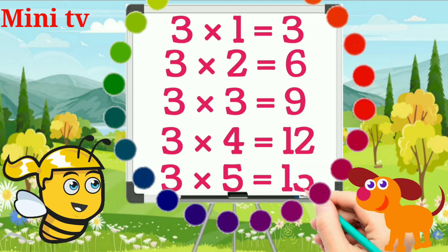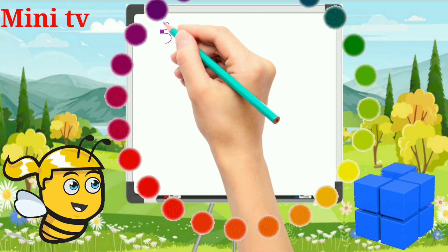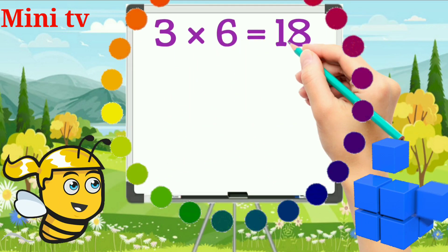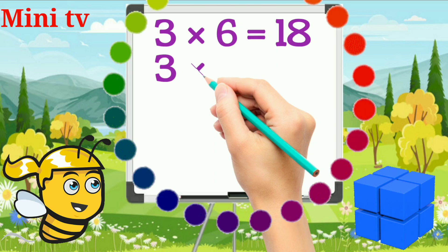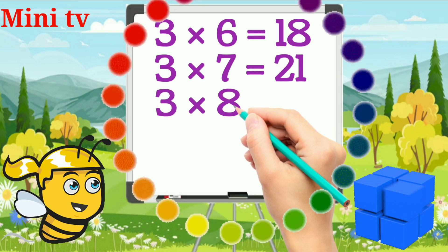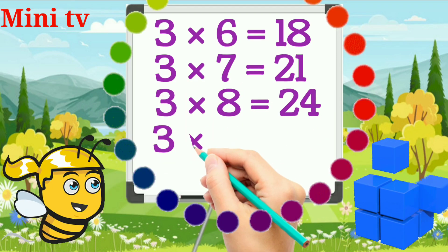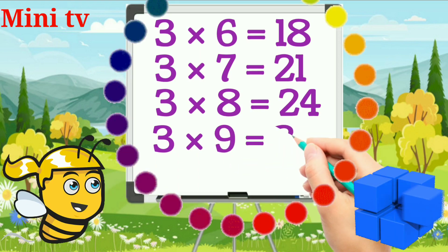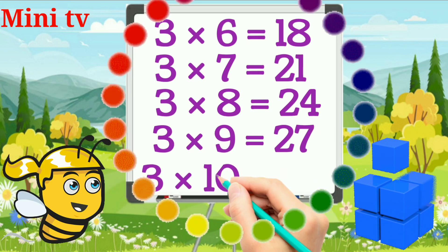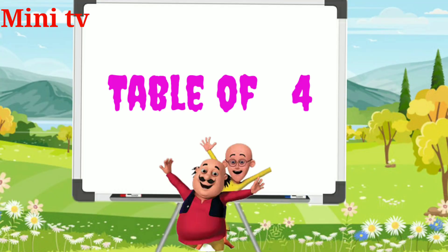3 fives are 15. 3 sixes are 18. 3 sevens are 21. 3 eights are 24. 3 nines are 27. 3 tens are 30.